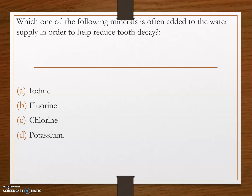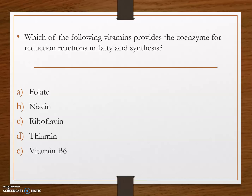Next question: which one of the following minerals is often added to the water supply in order to help reduce tooth decay? Options are: option A, iodine; option B, fluorine; option C, chlorine; and option D, potassium. The answer is fluorine. Fluorine helps to reduce tooth decay.